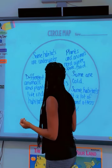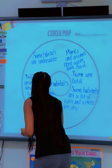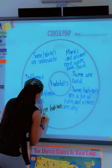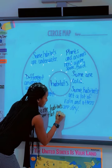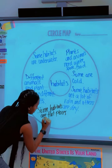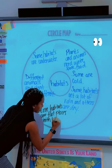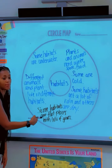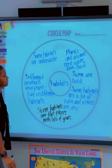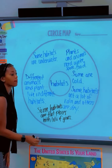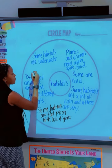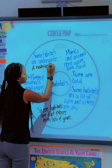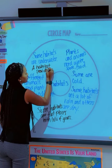Yes? Some habitats are flat places with a lot of grass. What do we call this habitat, class? A grassland. A grassland. What else? Yes? A habitat provides shelter. A habitat provides shelter. Very good.